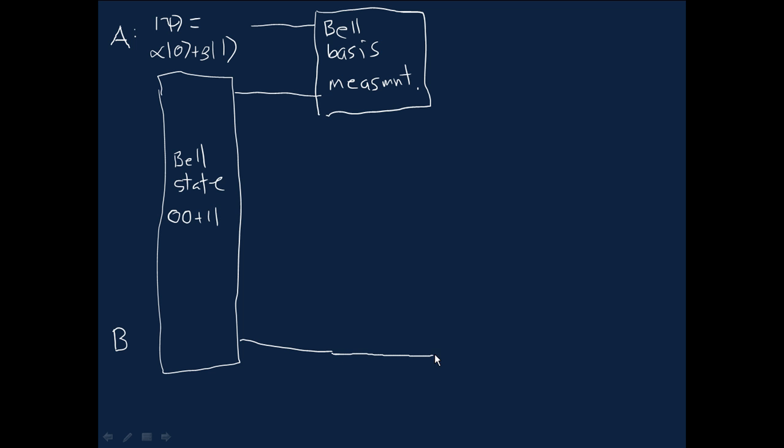So this qubit of Bob's keeps on going. And after this bell basis measurement has been done, yielding one of four possible outcomes. So this is a partial measurement in the bell basis on Alice's qubits, yielding one of the four different bell basis elements. Yet there is a posterior state for Bob down here and a crucial step in understanding the teleportation protocol is to figure out exactly what that state is. We'll do that in a bit.